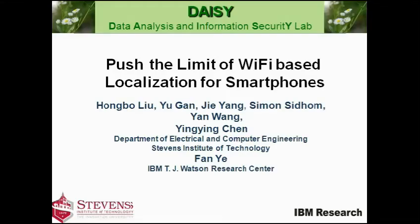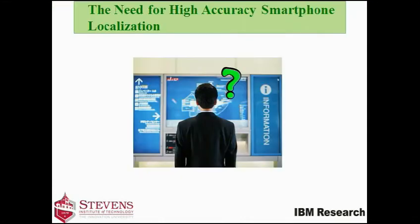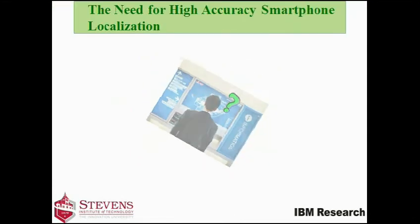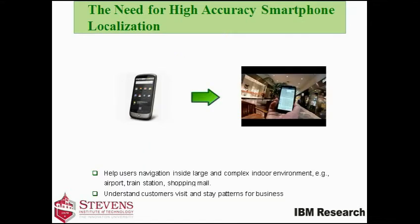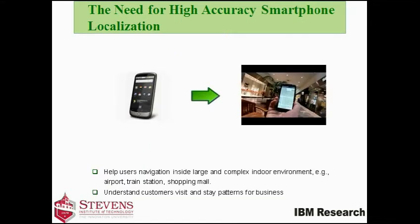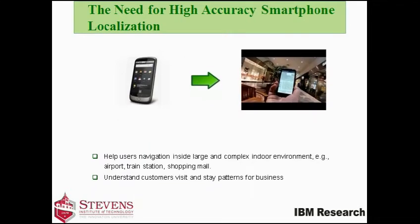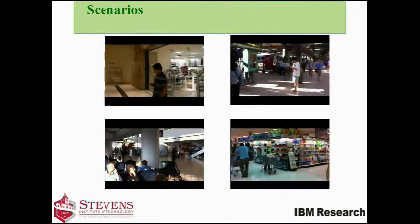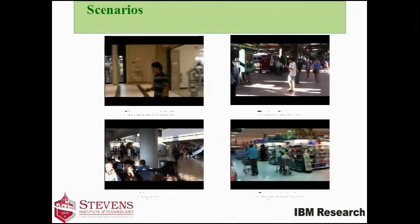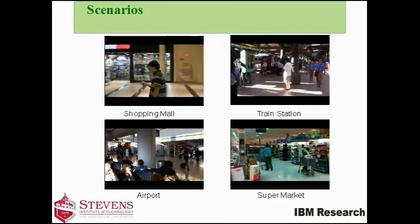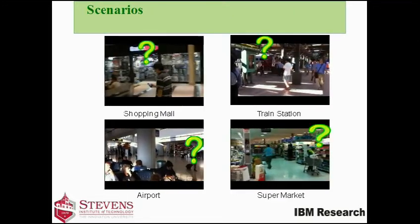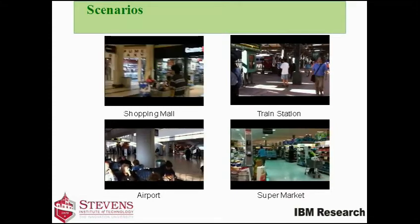Indoor localization has become a critical inhibitor for smartphone applications. In addition to Wi-Fi technology, many emerging applications demand high accuracy. In many environments, for example shopping mall, train station, airport, and supermarket, the location helps users navigate — such as going to the correct platform — and businesses need to understand the patterns of customer visits.